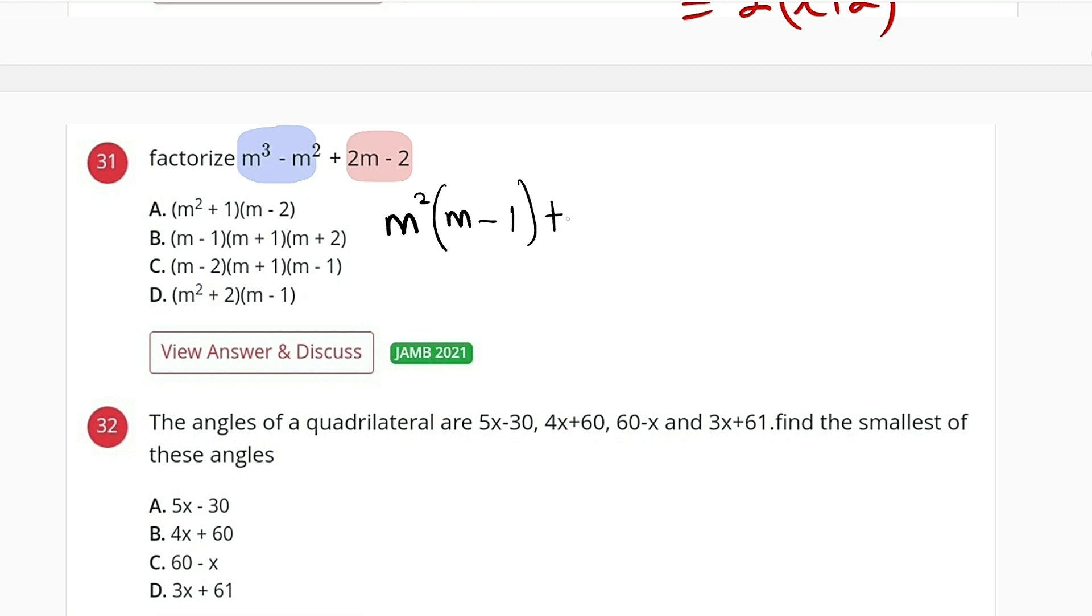Then from 2m and 2, we have 2 in common, so we bring 2 out. Inside we have 2m divided by 2 which is m, minus 2 divided by 2 which is 1.